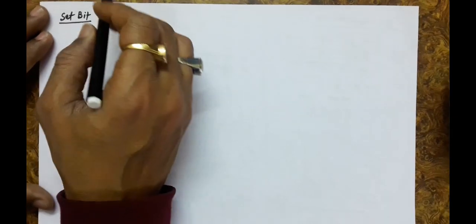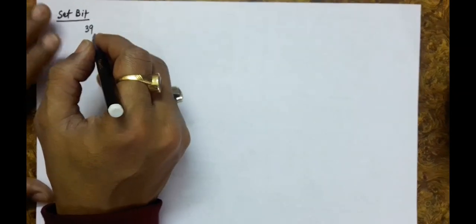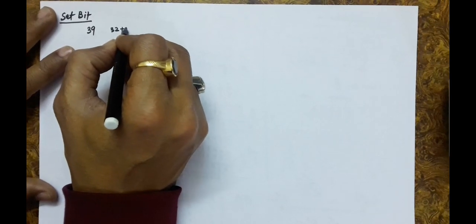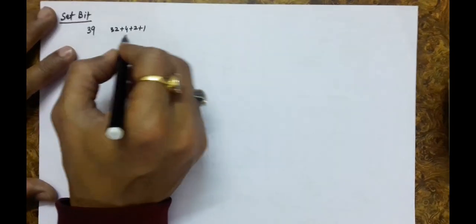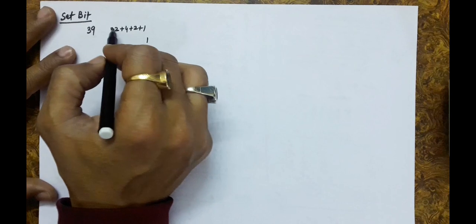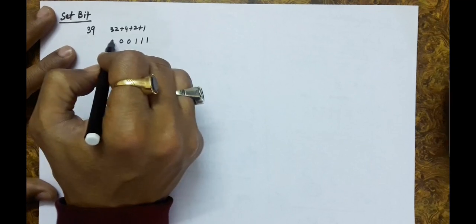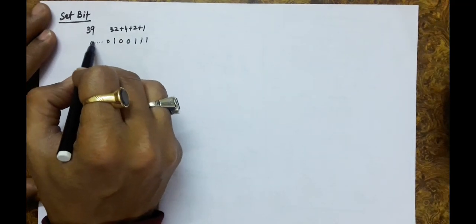Hello everyone. In this lecture, we will discuss some more concepts related to bit manipulation. Suppose there is a number — let us say we have 39. How is 39 represented in binary? 32 plus 4 plus 2 plus 1. So bit position 1 is 1, bit position 2 is 1, bit position 4 is 1, bit position 8 is 0, bit position 16 is 0, bit position 32 is 1 with the leading zeros.